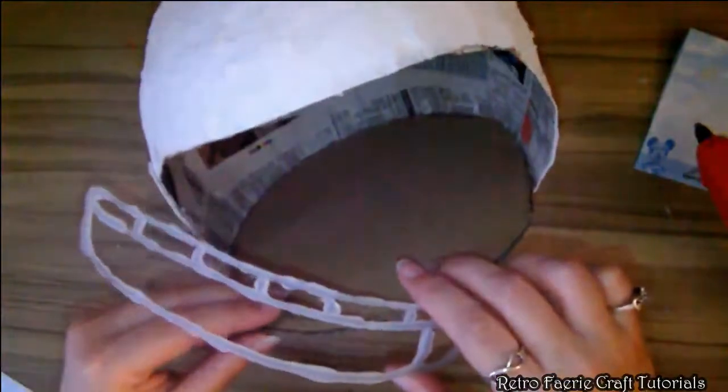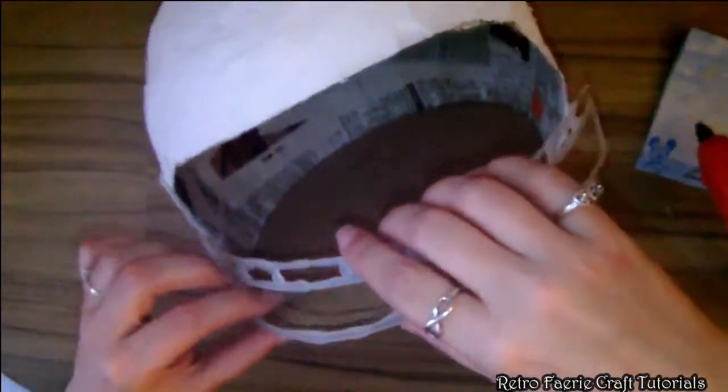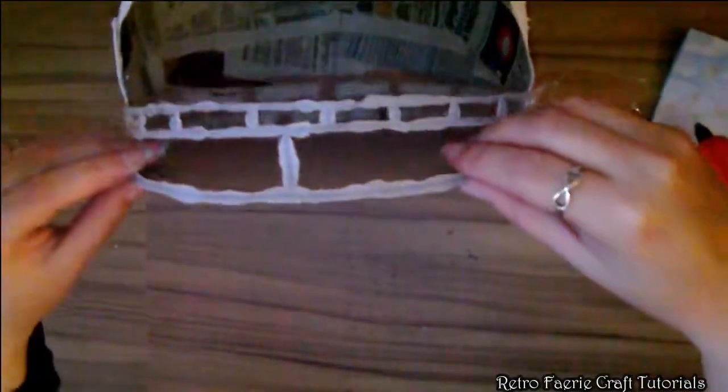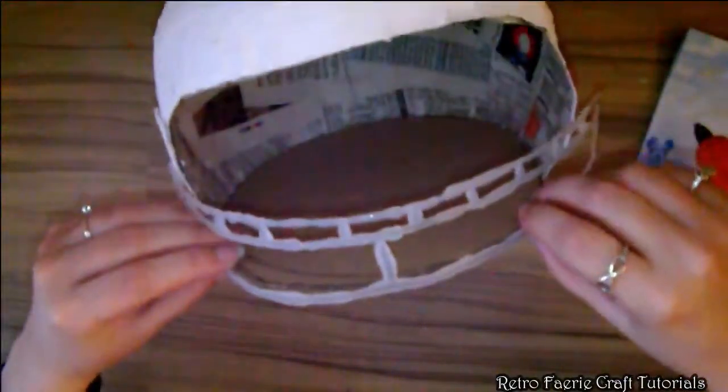Then we're going to attach this to the front. Basically you're going to use the glue gun again and just glue it along the bottom edge and then at the sides to the helmet.